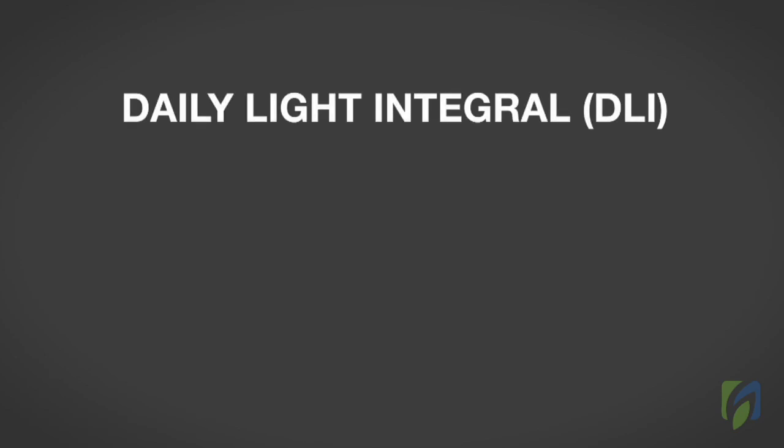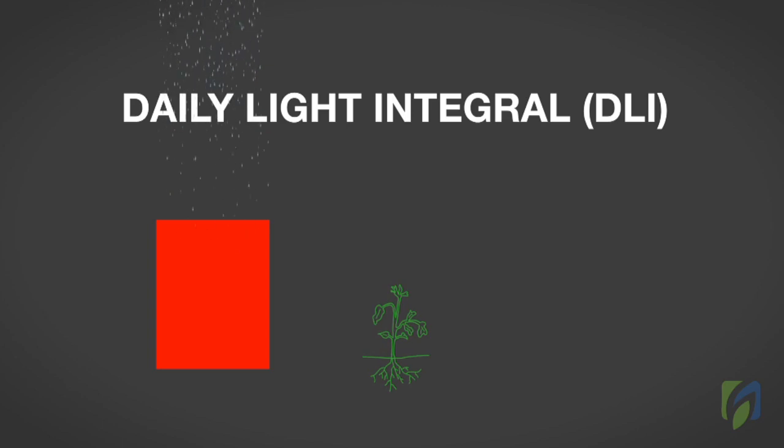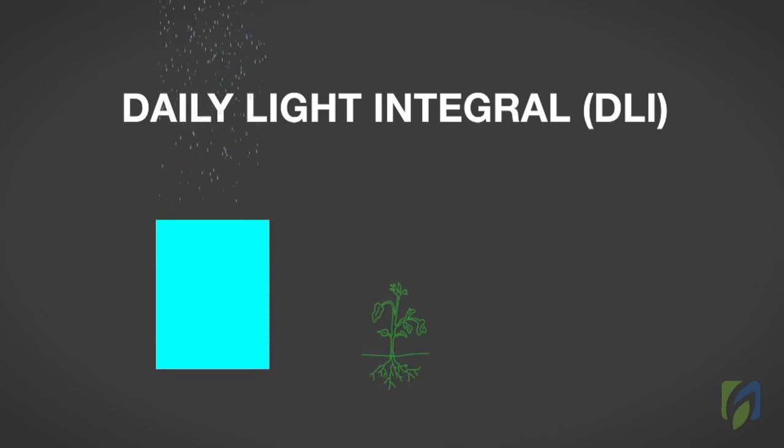Daily light integral, or DLI, is the sum of light delivered during the course of one day. A good example of understanding DLI is to consider how you would measure the amount of rainfall in a day. Using a rain gauge, you can measure the amount of rain that has fallen in a particular spot over a 24-hour period.